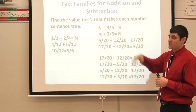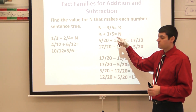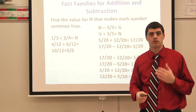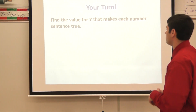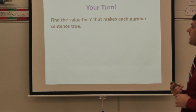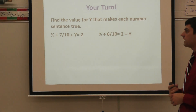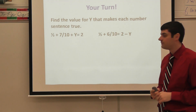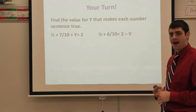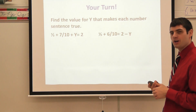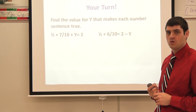In my original problem, I wanted to make my life a little bit easier, so instead of working with the subtraction problem, I made it an addition problem, found the common denominators, and added across. It's a handy strategy to help you if you prefer to work this way. Now you're going to find the value of the variable y that makes each one of these sentences true. You have one half plus seven tenths plus y equals two, and also one half plus six tenths equals two minus y. Go ahead and pause this video and we'll see how you guys do.